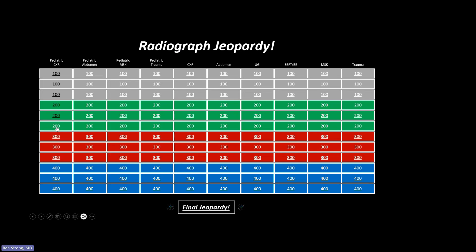Those will change, by the way. I've admitted acute asthmatics where they had left upper lobe, right lower lobe consolidation, and then repeated the X-ray the next morning and it's reversed, involving entirely different areas of the lung. That's very helpful — then you absolutely know you're dealing with transient mucus plugging and asthma.